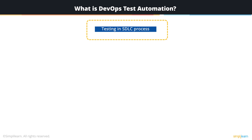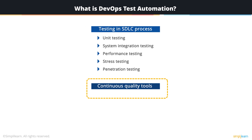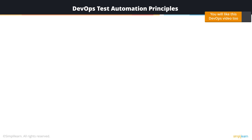Let's look at what DevOps Test Automation is. Similarly, where all the steps of your software development and delivery process can be automated, the testing that comes at the different stages — like your unit testing, integration testing, performance testing, stress testing, and penetration testing — can also be automated. These tests are done at different stages of your software development project. Test Automation also includes continuous quality tools that help manage and maintain the code quality aspects, including automated code coverage checks and automated code reviews.